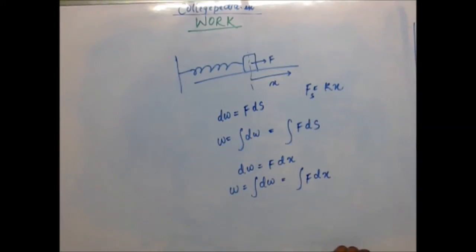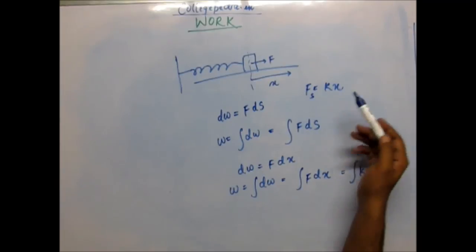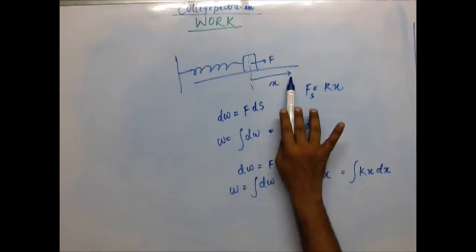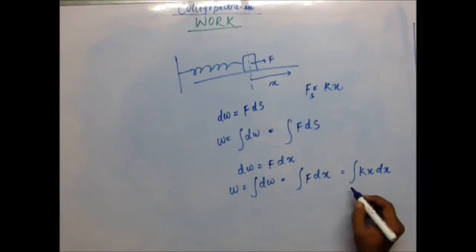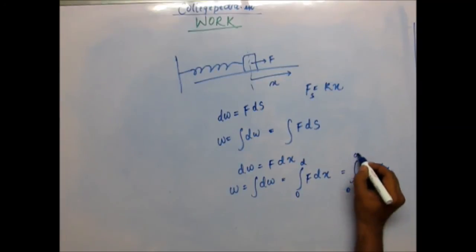When the displacement has been x, the force you have to apply will be equal to k into x, because when displacement of the block is x, the spring force is kx and you have to apply the same amount of force to balance. This is what you have to integrate. For total work done for a displacement d, the limit would be - x is varying from 0 to d.